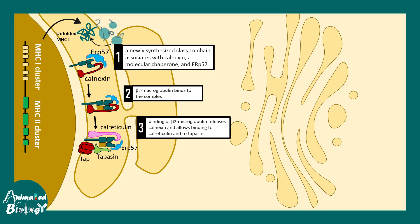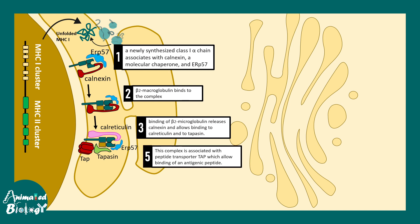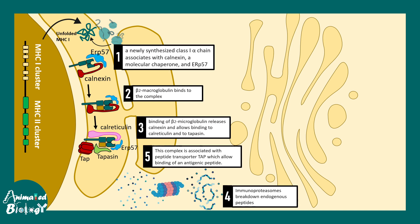The peptide itself is generated by the immunoproteasome in the cytoplasm. Large peptide fragments are broken down into small fragments which enter the endoplasmic reticulum with the help of the TAP transporter. Notice that the TAP transporter is in the near vicinity of the class 1 MHC molecule, and they all form a peptide loading complex together with tapasin and ERP57.